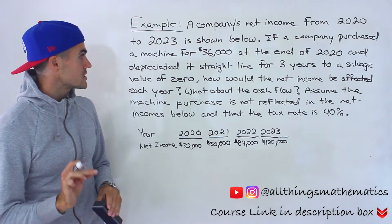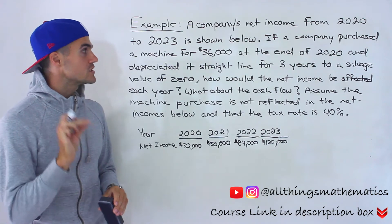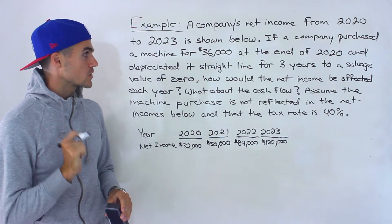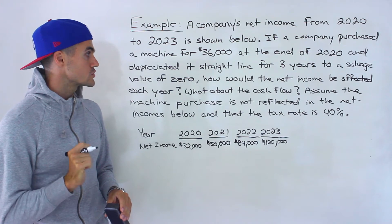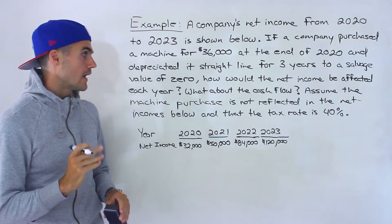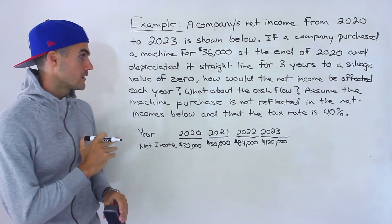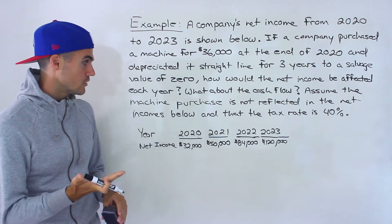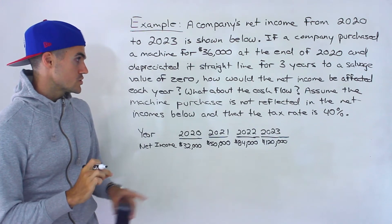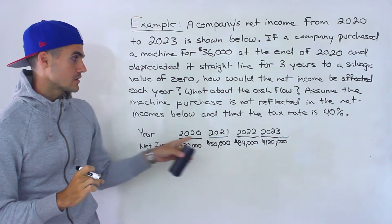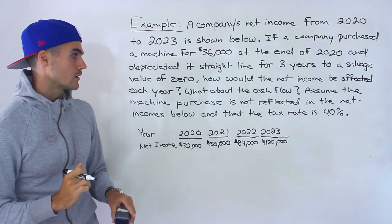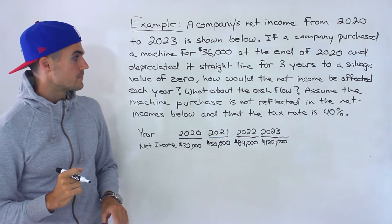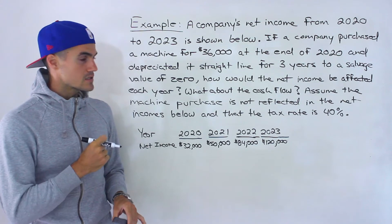A company purchased a machine for $36,000 at the end of 2020 and depreciated it straight line for three years to a salvage value of zero. How would the net income be affected each year? What about the cash flow? We have to assume the machine purchase is not reflected in these net incomes, and that the tax rate is 40%.